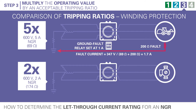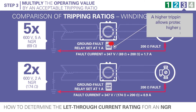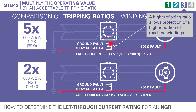When a ground fault occurs internal to a motor, the added impedance of the motor winding will also limit the amount of ground fault current that can flow. Because of this, a higher tripping ratio is necessary to detect high impedance faults and provide machine winding ground fault protection. In the example shown, the system with a tripping ratio of five will protect the equipment, and the system with a tripping ratio of two will not.